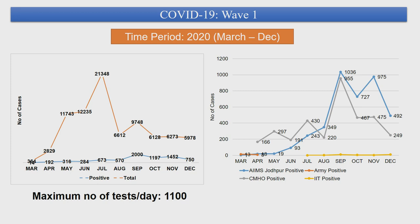Looking at the data from the first wave — March to December 2020 — the maximum number of samples received was 21,348, during June and July. However, the actual positivity was higher during August and September, both from AIIMS and from CMHO samples from PHCs in Kudi Bagasani, Jalamand, and Madhuban Nuri areas. The maximum number of tests conducted per day during this period was 1,100 tests per day.